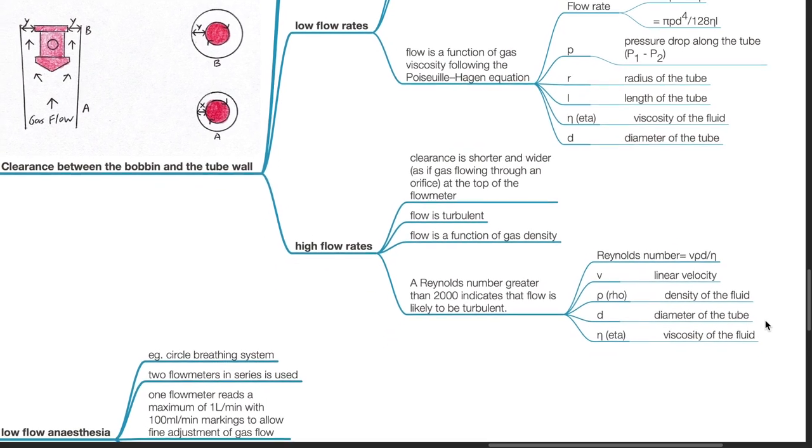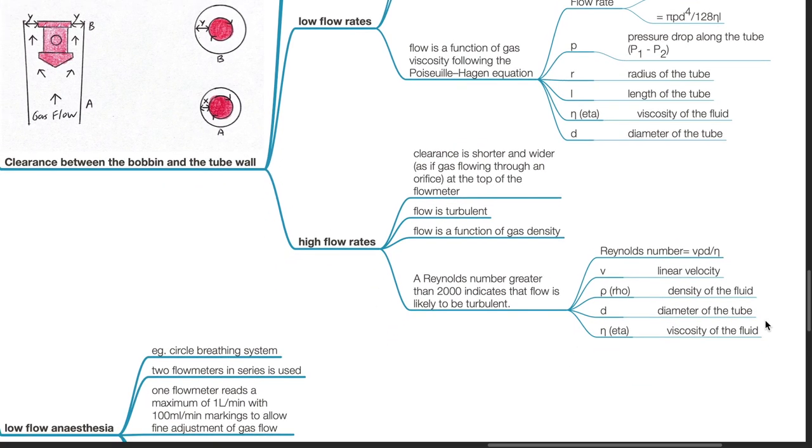At high flow rates, clearance is shorter and wider, as if gas flowing through an orifice at the top of the flow meter. Flow is turbulent and it is a function of gas density. A Reynolds number greater than 2000 indicates that flow is likely to be turbulent.